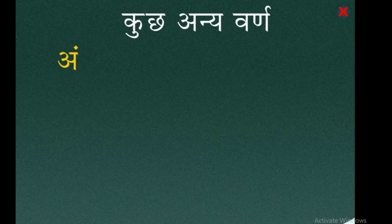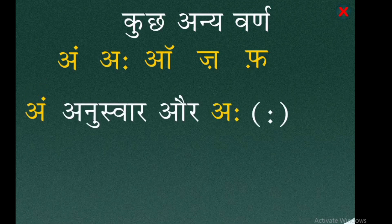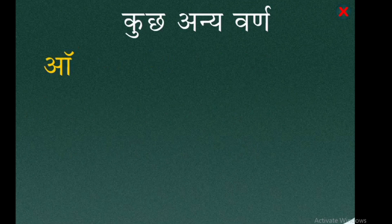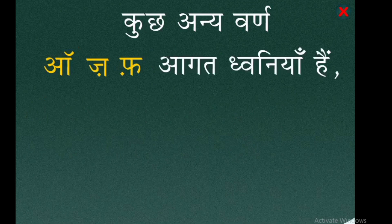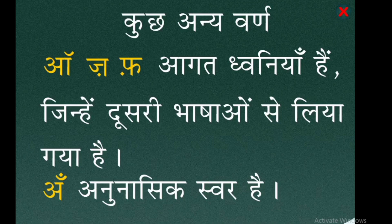Kuch anya varn hain: अं — anuswar, और अः — visarg kehlaate hain। औ, ज, फ — ye aagat dhwaniyaan hain jinhe doosri bhashaon se liya gaya hai। अँ — anunasik swar hai।